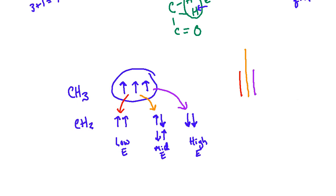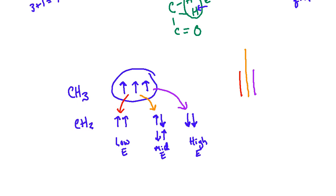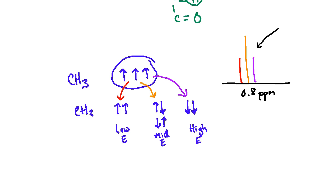These peak ratios actually follow Pascal's triangle — you can look it up and see the pattern, which corresponds exactly to these different spin states. So for the CH3, let's say this triplet appears at around 0.8 ppm. The splitting is due to the different neighboring coupled spin states that occur between the CH3 and the CH2 when they are linked.